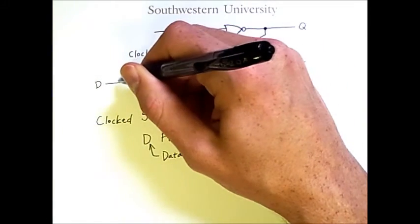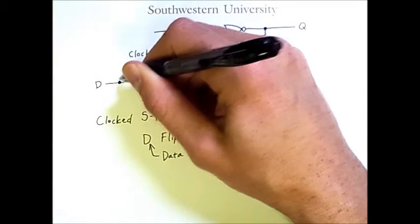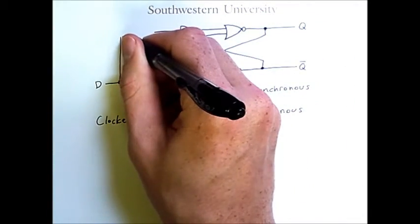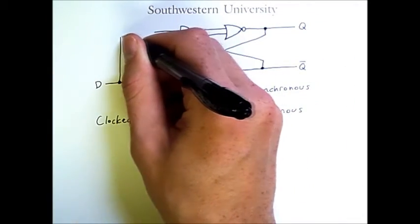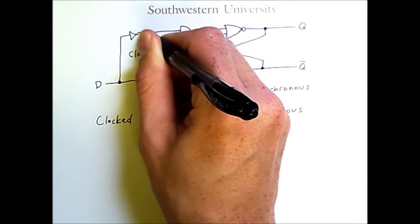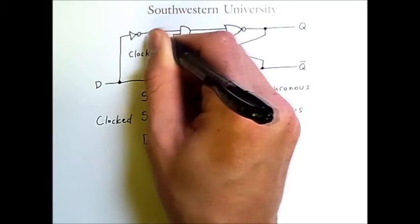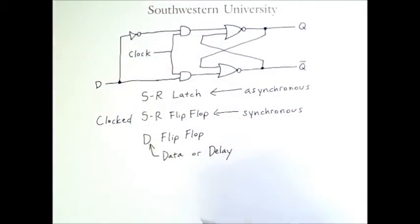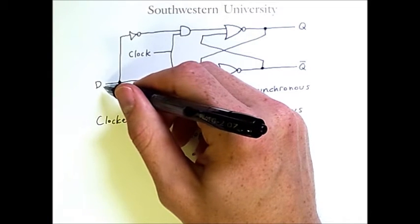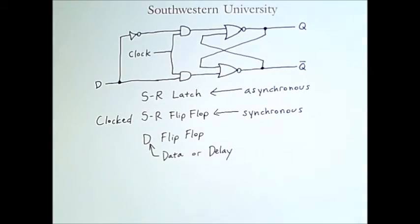But that input is split off on two lines by a NOT gate so that one of these lines always gets the negation of D and the other simply gets D as its input.